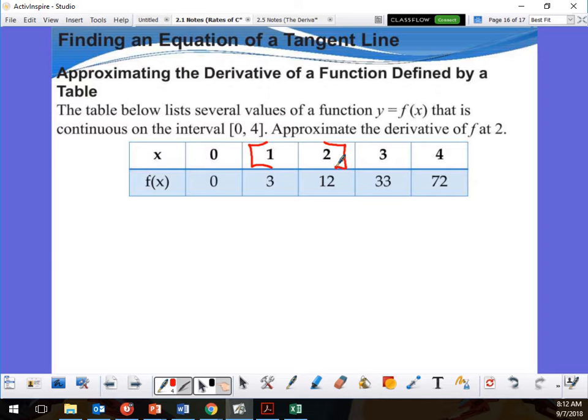If I'm finding the slope in between those, it's going to be 12 minus 3. What's the difference? That's a y. Y2 minus Y1 over X2 minus X1, the basic slope formula.